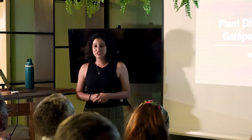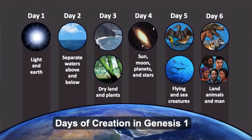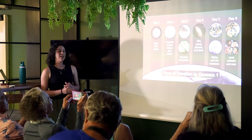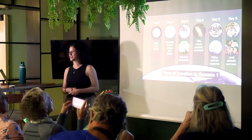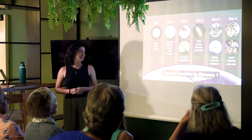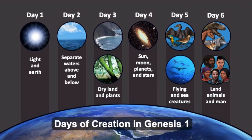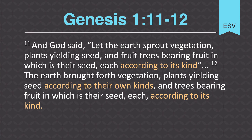What better place to start than at the beginning? From the biblical account of creation about 6,000 years ago, God commanded the dry land and plants to form on day three. Specifically in Genesis 1:11-12 it says: 'And God said, Let the earth sprout vegetation, plants yielding seed, and fruit trees bearing fruit in which there is their seed, each according to its kind. The earth brought forth vegetation, plants yielding seed according to their own kinds, and trees bearing fruit in which is their seed, each according to its kind.'